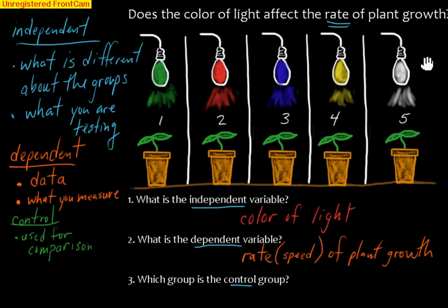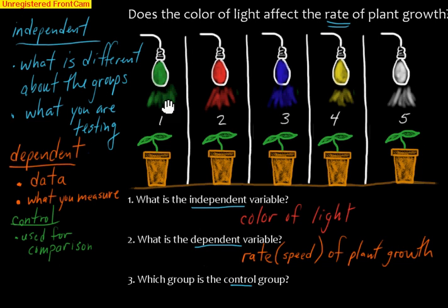We have regular white light here used for comparison — that tells us what a normal plant would do under regular white light. The other groups, one through four, are going to be called our experimental groups. Those are the groups where we're doing something strange, new, or different. Plant five would be our control group. The control group is plant five with the regular white light.